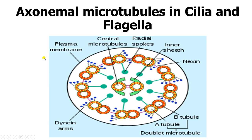This is a section of the axonemal microtubules found in cilia and flagella, showing the classical nine plus two pattern. You have nine doublets arranged around the periphery — one, two, three, four, five, six, seven, eight, nine — and then a pair of singlets in the center. The central microtubules are singlets, giving the two, while the peripheral doublets number nine. This is the classical nine plus two configuration.